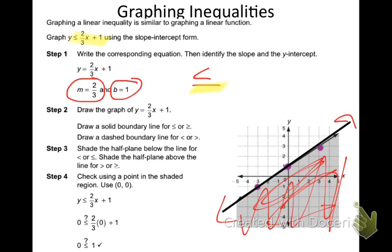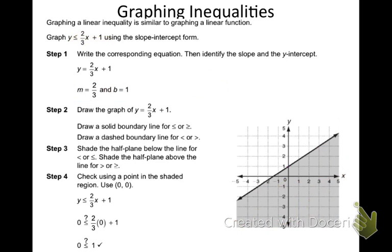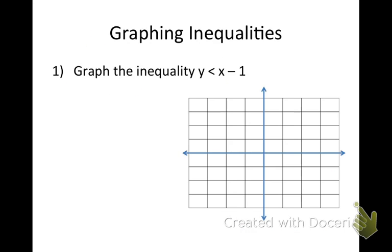If it was greater than or greater than or equal to, I would now shade above the line. So the shading depends entirely on what that inequality symbol is.